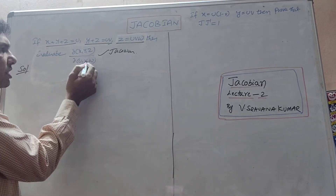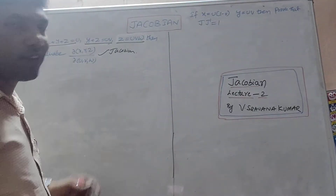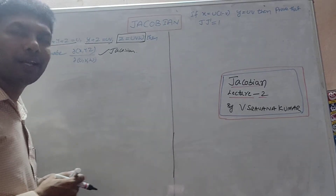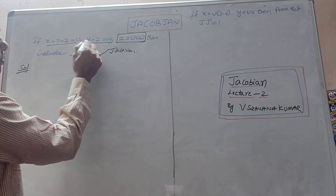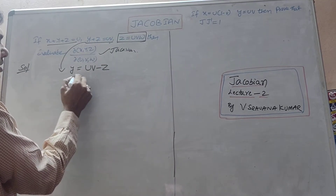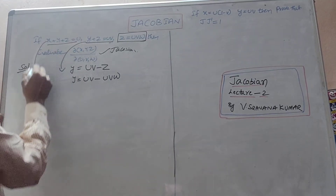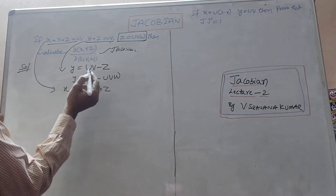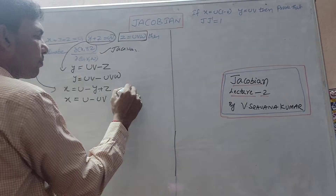We discuss x, y, z as functions of u, v, w. From the given relations: x plus y plus z equals u, so x equals u minus uv. And y plus z equals uv, giving y equals uv minus uvw. And z equals uvw.